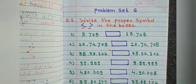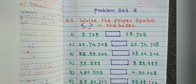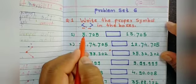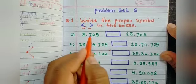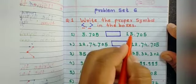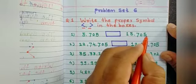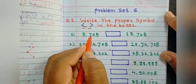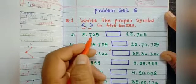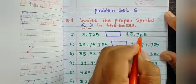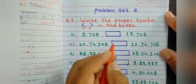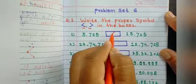First number: 5,705 and 15,705. Here 1, 2, 3, 4 digits, here 1, 2, 3, 4, 5 digits. Five digits means the number is bigger. So 15,705 is the bigger number.